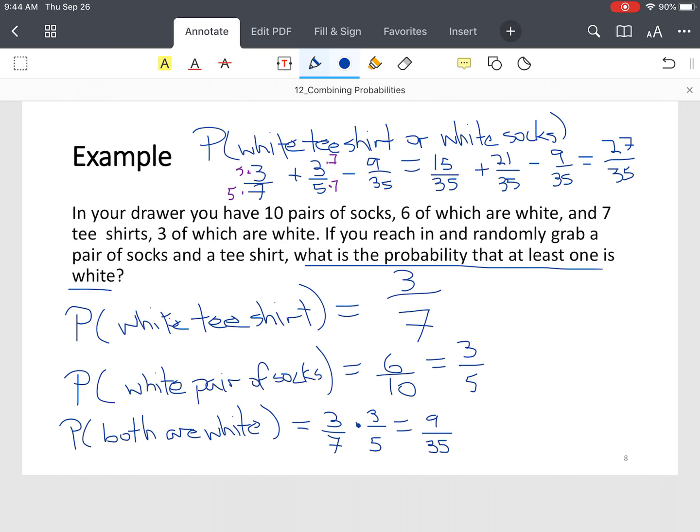27 out of 35, there's no common multiple, so that is your solution, 27 out of 35. And again, convert it depending on the directions giving in the question.